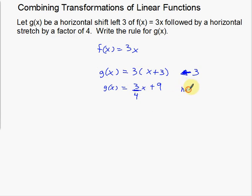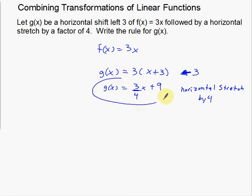That gives us the horizontal stretch by 4, which only affects the x portion — the slope — of my function. So I had to divide by 4. That's basically it. We did one transformation at a time: first we shifted left 3, distributed, and got 3x plus 9; then a horizontal stretch by a factor of 4 means we divide the slope by 4, giving us three-fourths x plus 9. When doing multiple transformations, just take one step at a time, simplify as needed, then apply the next transformation.